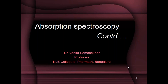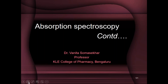We'll continue from where we left off last class. We were discussing the sources of radiation in UV-visible instruments. We've seen the general requirements for sources: the radiation should be stable, of stable intensity, of sufficient intensity, and you should have continuous radiation. We've also seen the different types of sources generally used in UV-visible spectroscopic instruments.